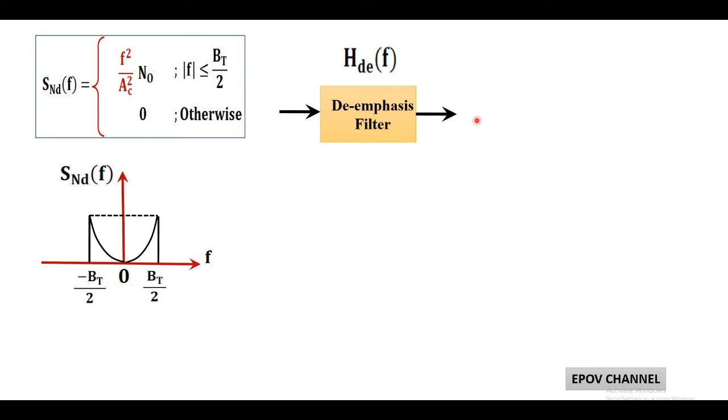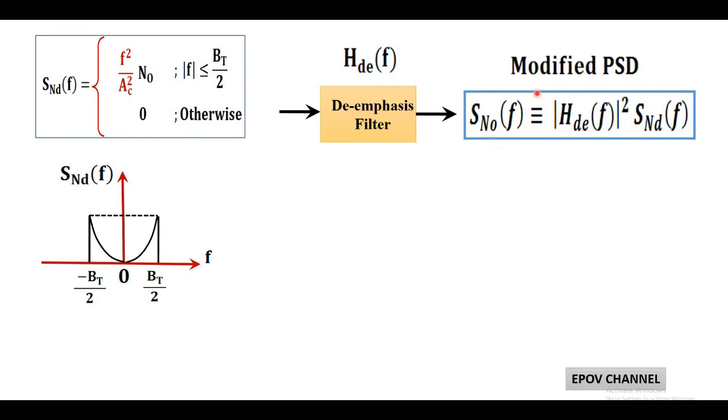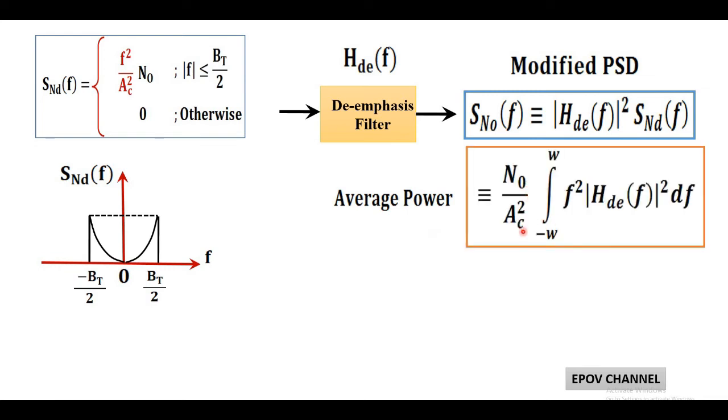Therefore, output of de-emphasis filter is given by S_N₀(f) equals to product of power spectral density of derivative noise and square of the magnitude of de-emphasis filter. This S_N₀(f) is also called modified power spectral density. Using this output modified power spectral density, we can find average power within bandwidth of ±W. So average power of this modified noise equals N₀/AC² times integration of f² times square of magnitude of de-emphasis filter dF, taking limit from -W to +W.